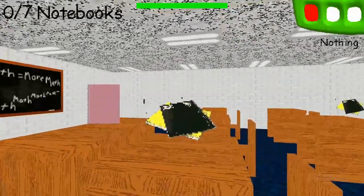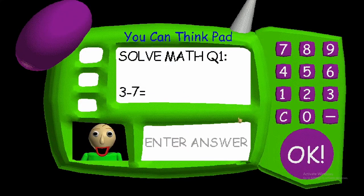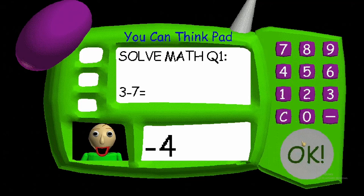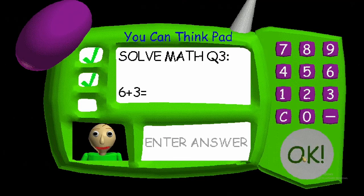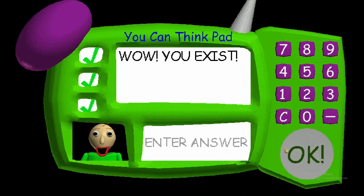Okay, click on it and you gotta answer some math problems. Fuck! What is this? I'm not doing this. Just — okay, three minus seven equals negative four. Just type them and press okay. This is a piece of shit right here. We learned this in high school — remember those times?